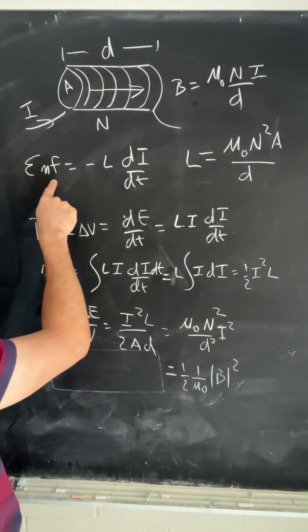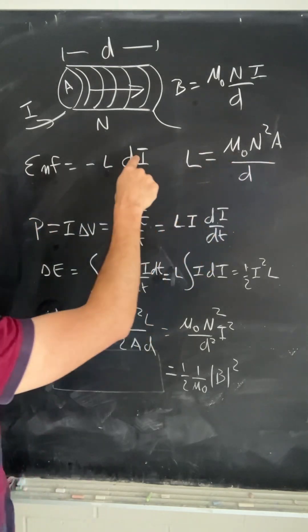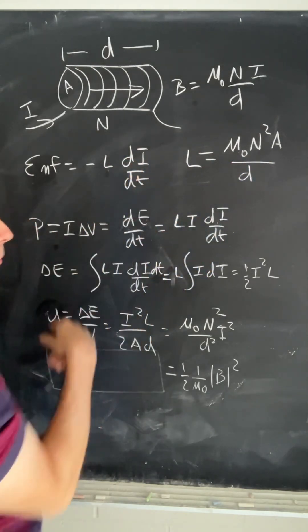So here we can write the voltage, the EMF, as the inductance, which depends on that stuff right there, times the derivative of the current with respect to time.